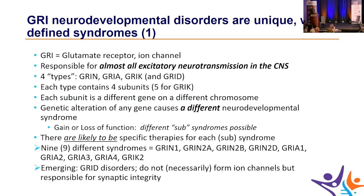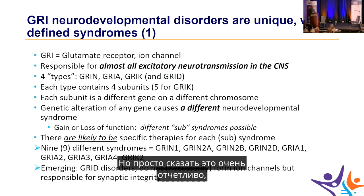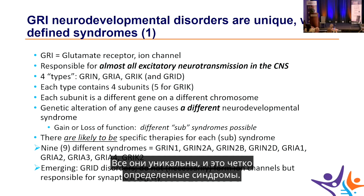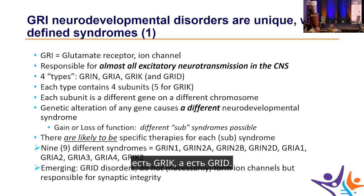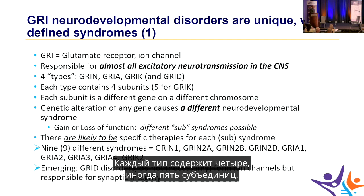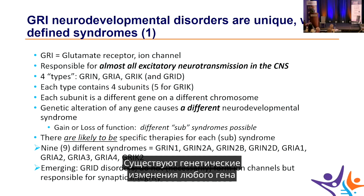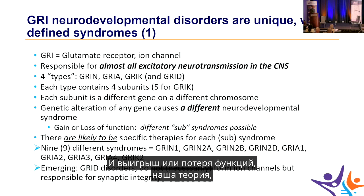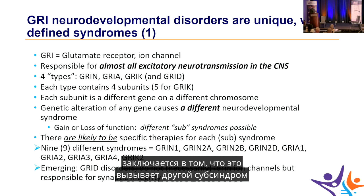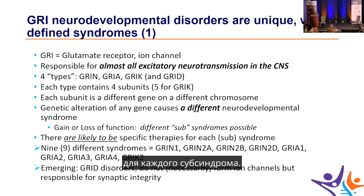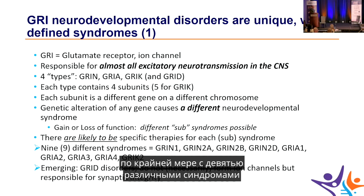GREE neurodevelopmental disorders are unique and well-defined syndromes. GREE stands for Glutamate Receptor Ion Channel, responsible for almost all excitatory neurotransmission in the nervous system. There are four types: GRINs, GRIAs, GRICs, and GRIDs, each containing four or five subunits, with each subunit encoded by a different gene on a different chromosome. Genetic alterations of any gene cause a distinct neurodevelopmental syndrome.